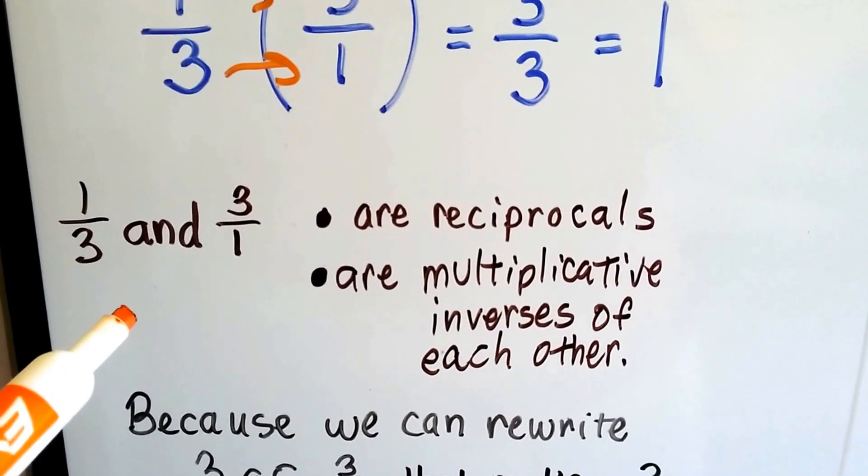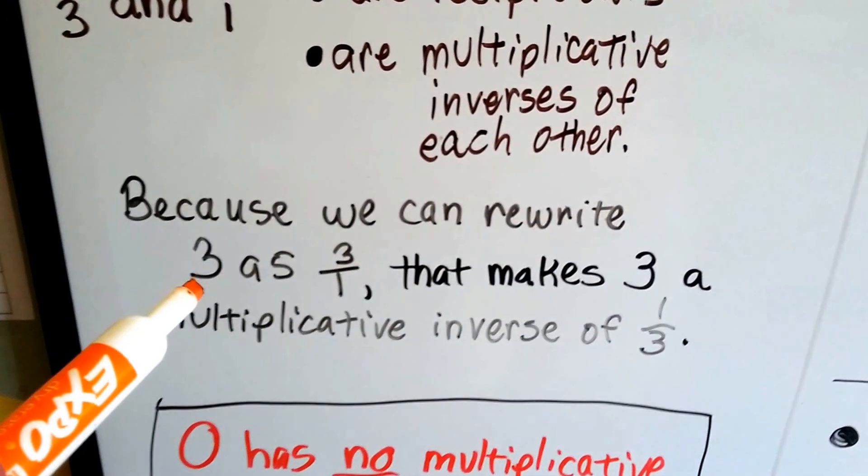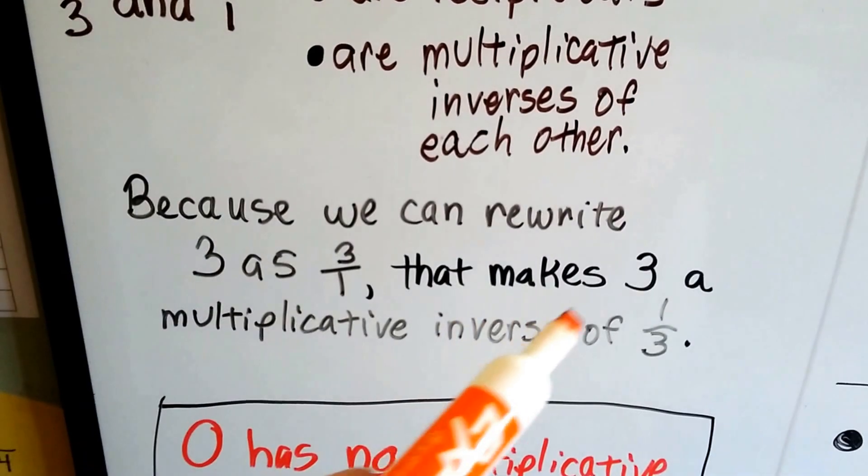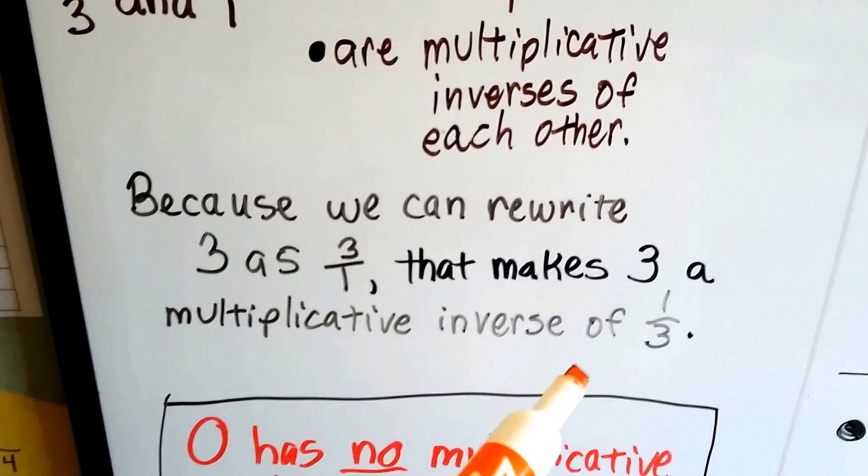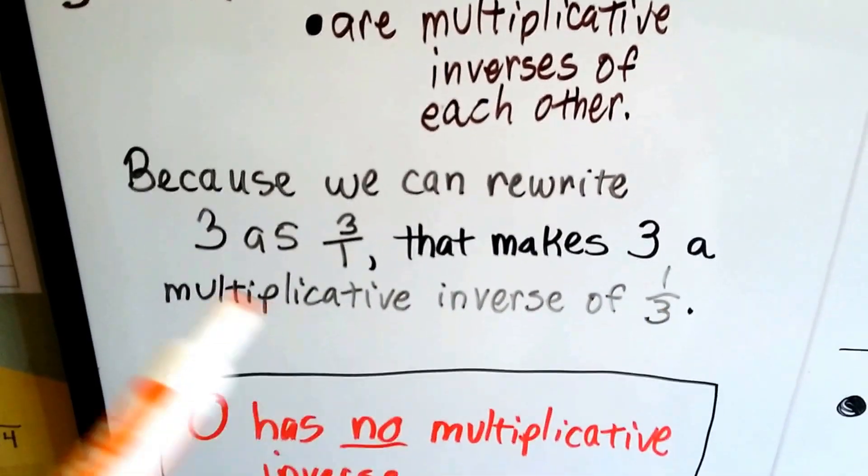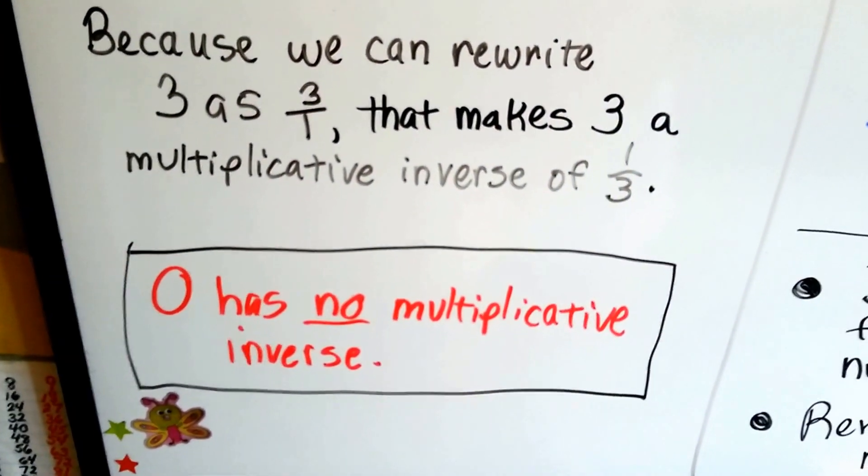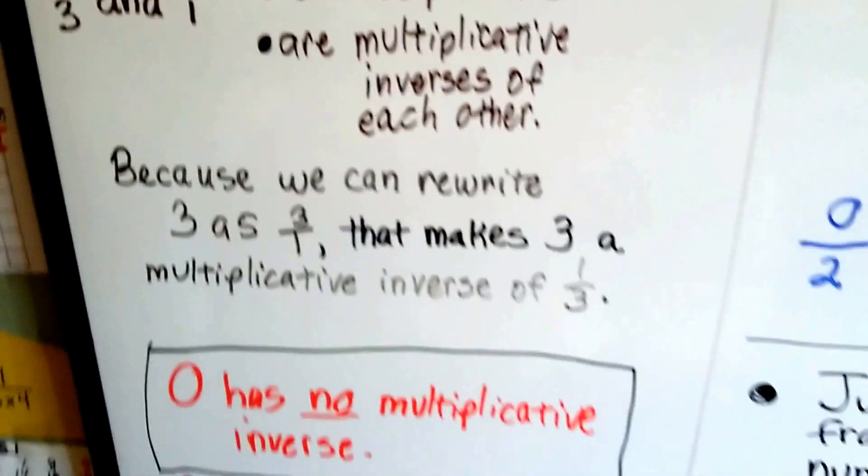They're multiplicative inverses of each other. And because we can write the number 3 as 3 over 1, that makes 3 a multiplicative inverse or reciprocal of 1 third. Just remember, 0 has no multiplicative inverse. It's got no reciprocal, because we can't divide by 0.